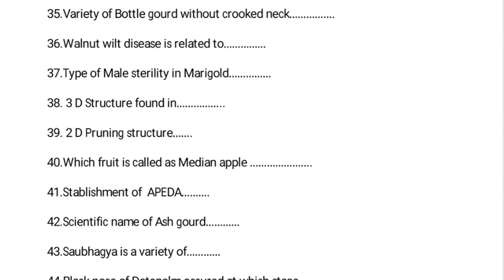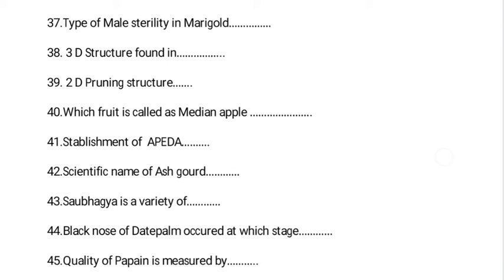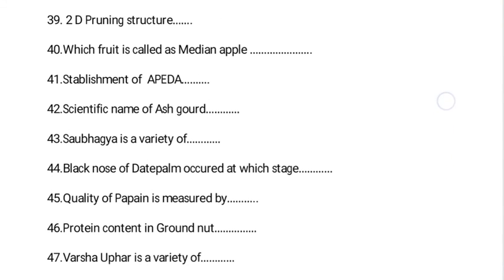Saubhagya is a variety of pickling melon. Scientifically, pickling melon is Cucumis melo var. conomon. Black nose of date palm occurs at which stage? Black nose occurs at the Doka stage, and white nose occurs at the Dang stage in date palm.